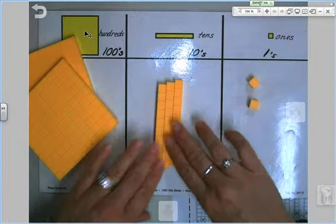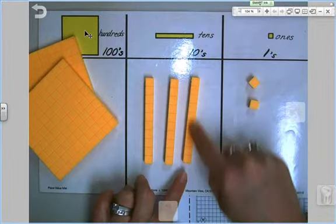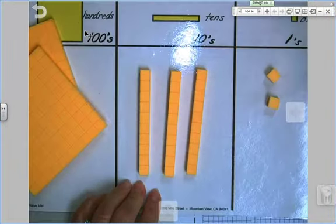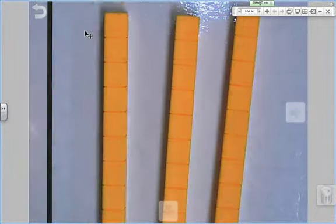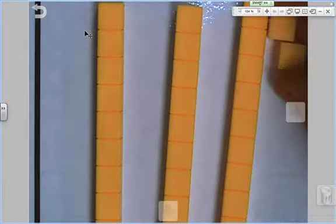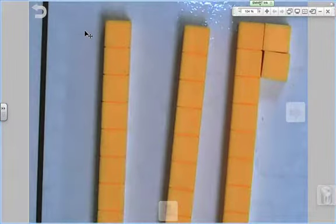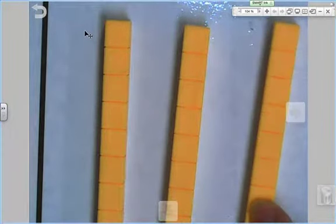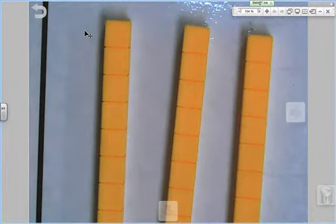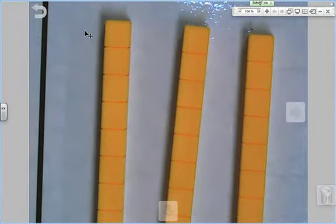These are called tens rods. They're worth 10 each because if you look super closely, I'm going to zoom in there. There are 10 of these in each rod. So there are 10 ones in a tens rod. See how they line up? So how many are inside of a tens rod? There are 10 in each tens rod.